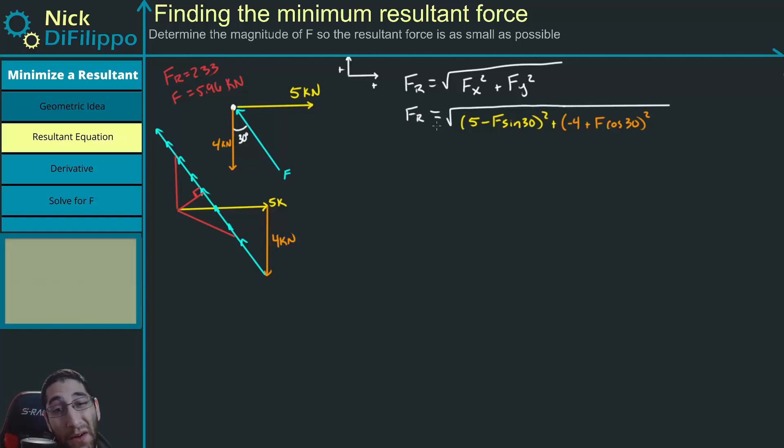So at this point, you might be going, well, I'm trying to solve for FR, but I don't know what F is. I don't know how to use this equation. And if you're trying to determine a minimum resultant force, so FR is a minimum with respect to some variable, in this case F, if we take the derivative of both of these and we set them equal to zero, set that derivative equal to zero, we'll be able to solve for one of our variables.